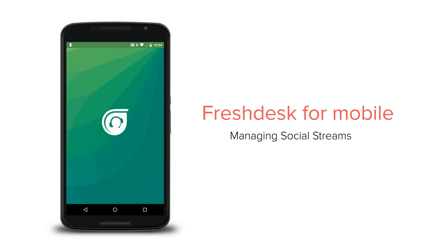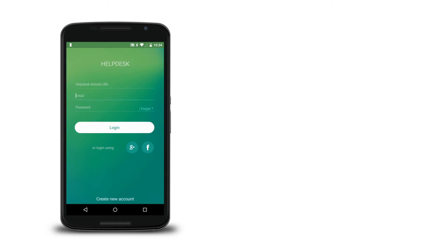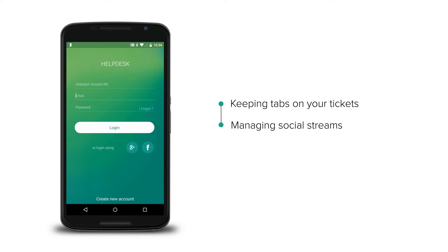The Freshdesk mobile app allows agents in your team to support your customers on the go directly from your Android and iOS devices. When you are away from your computer, the mobile app can be used for keeping tabs on your tickets, managing your social streams, and responding via phone support. It can be downloaded for free from the App Store or the Google Play Store.